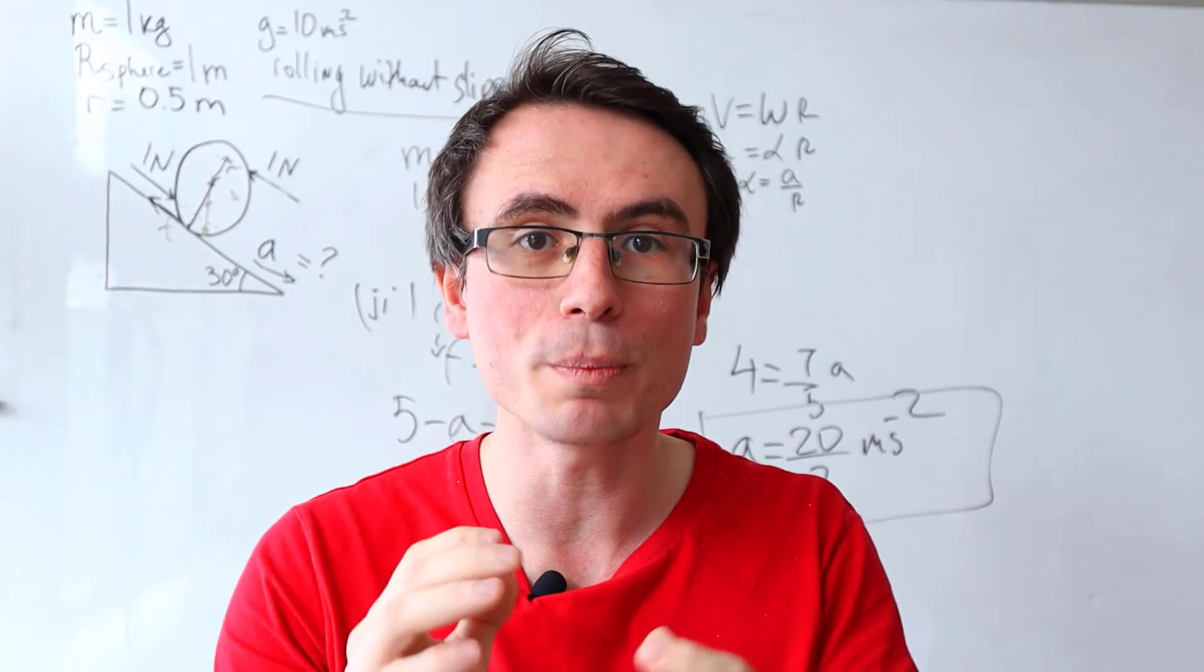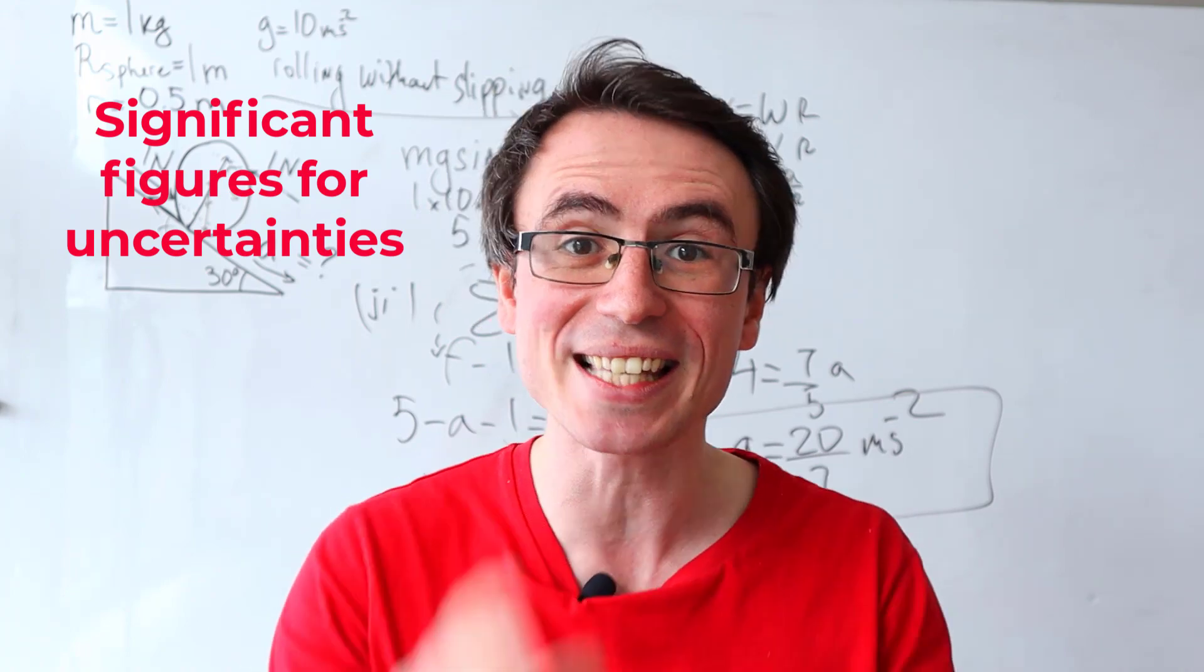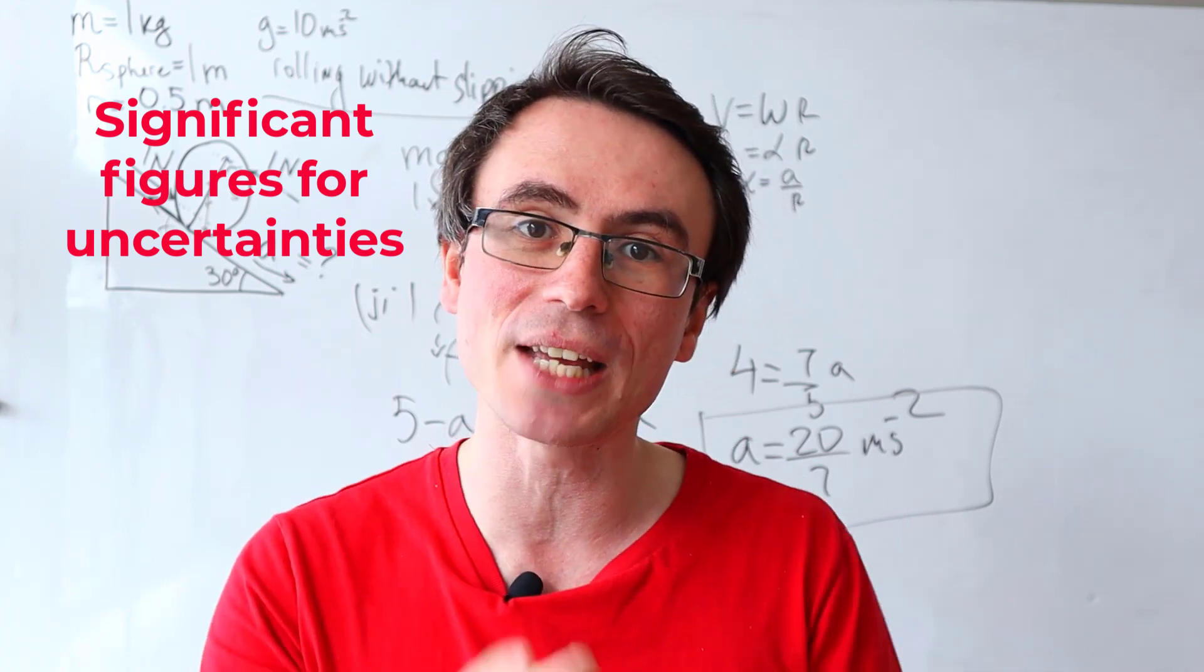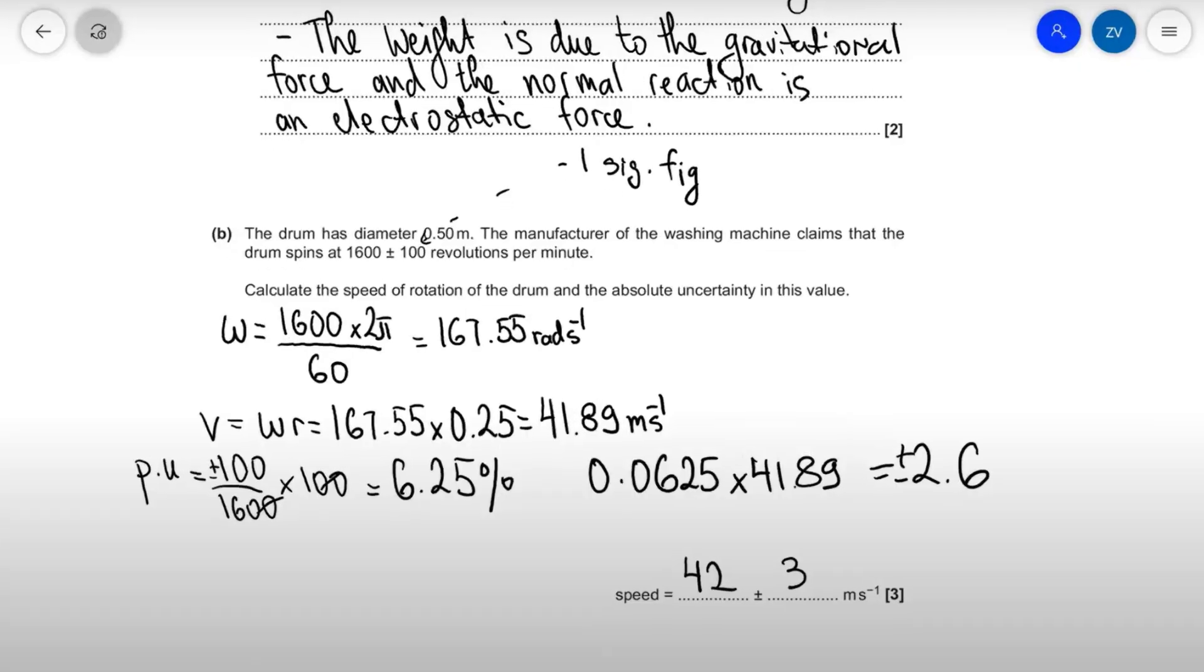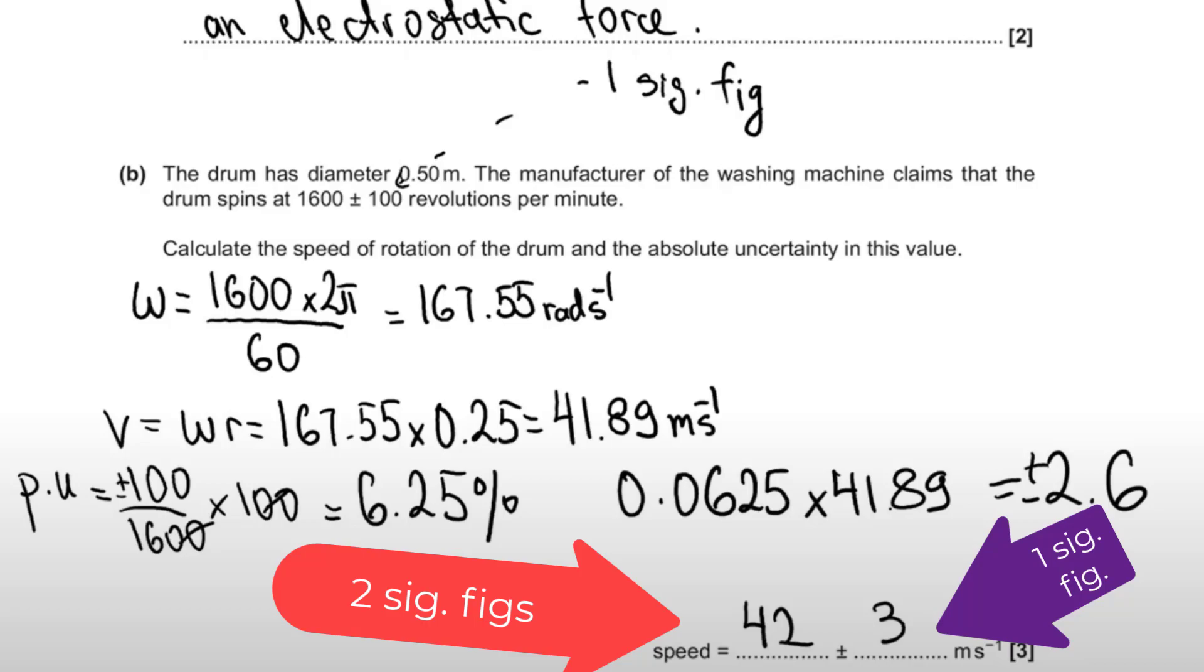Talking about this, also be aware that the significant figures in the uncertainties are different to the significant figures in the values. Let's say that you calculated a quantity up to two significant figures but all the uncertainties in the question were given up to only one. Your final answer should be the quantity given up to two significant figures and the uncertainty given up to one significant figure.